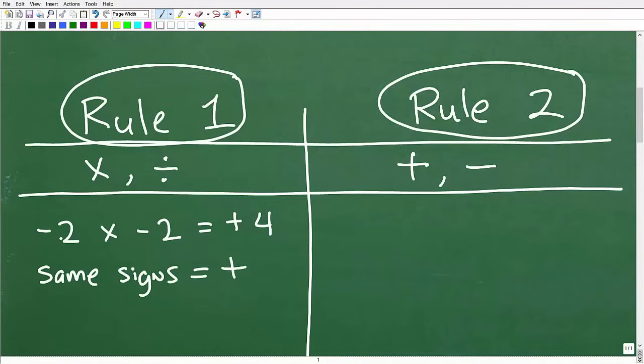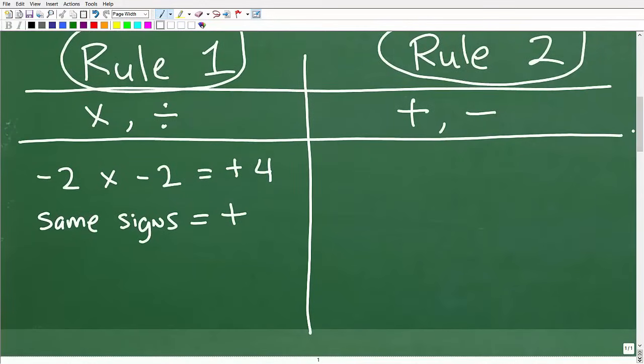So if this is a positive two times a positive two, we have positive four. Negative two times a negative two, going to be a positive four. And the rule, obviously if the signs are different, so different signs, then the answer will be a negative.